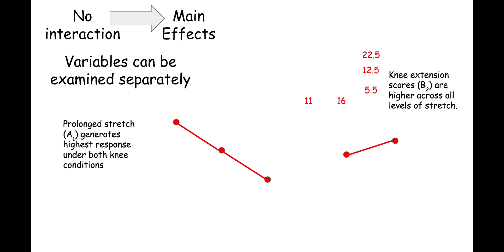If there is no interaction between two variables, then investigators will focus on the main effects of each variable separately. In this example, the lines are parallel, which means that the pattern of response at each knee position is consistent across all levels of stretch. The effect of each variable can be examined separately, essentially creating two single-factor experiments.